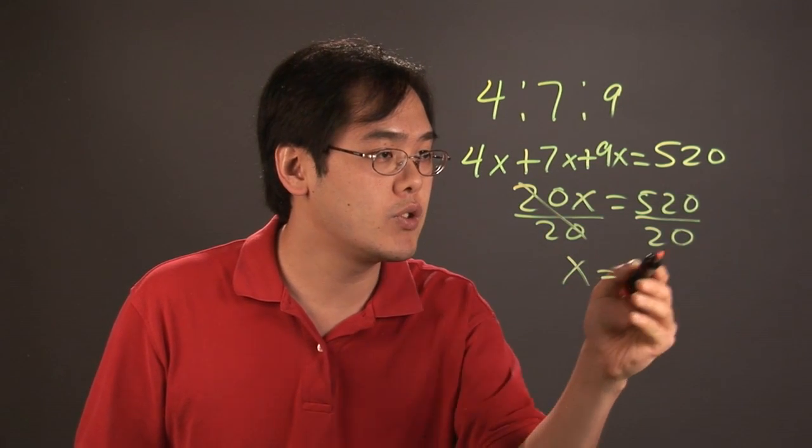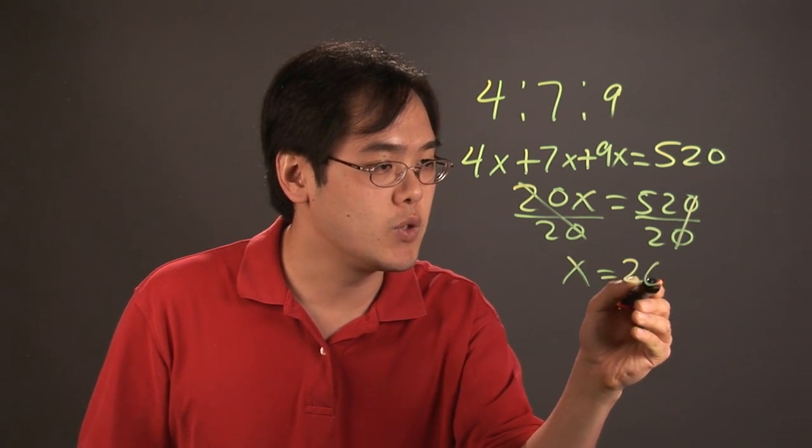This cancels. You have x is equal to, the zeros cancel, 52 divided by 2 is going to give you 26.